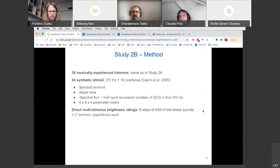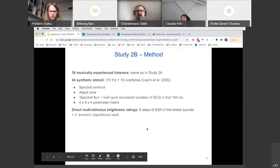So in the same experiment with the same listeners, we created 64 stimuli, based on a paper by Caclin and colleagues in 2005. So basically we had additive synthetic tones, 20 harmonics in total, all played at 311 Hertz. And we controlled three parameters of the sounds, the spectral centroid, the attack time and what Caclin called spectral flux, a half cycle sinusoidal variation of the spectral centroid in the first 100 milliseconds. You can think of that as the higher frequencies arriving a bit later than the lower ones. So think of brass instruments, for example. And we took four equally distanced parameters for each of these three. The original paper of Caclin had 16 steps. We only used, we sampled like at four equally distanced points. And again, we used the direct multistimulus ratings.